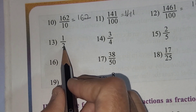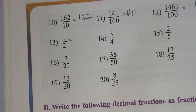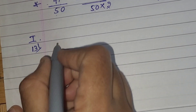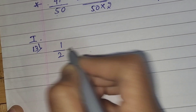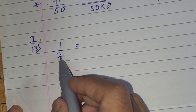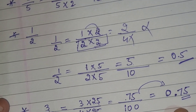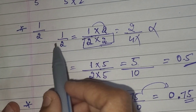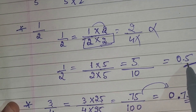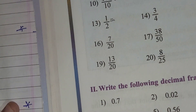Now come to the 13th example: 1 by 2. We have already solved this one in the explanation video. 1 by 2 gives us the answer 0.5, so we write 0.5 here.